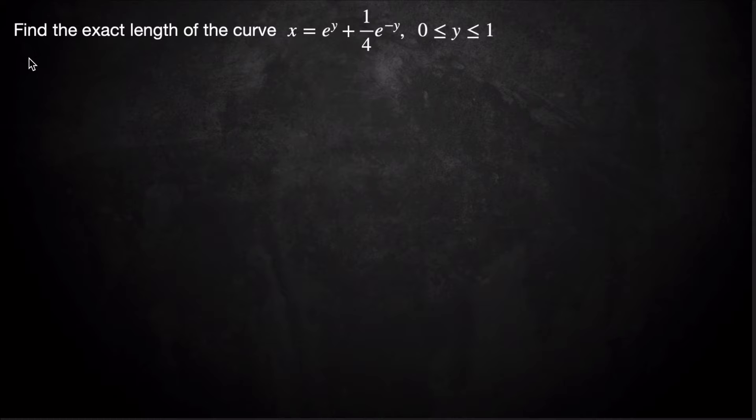So to find the exact length of the curve, we have to remember the arc length formula. Recall that the arc length formula S, where S stands for arc length, is going to be integral from A to B. And in this case, since we have x as a function of y, some curve that's on its side, we're going to have to do √(1 + (x')²) dy. So we're going to integrate with respect to y in this case.